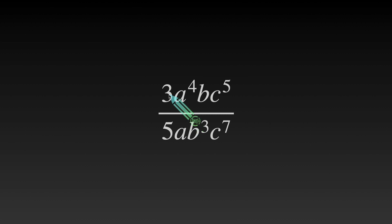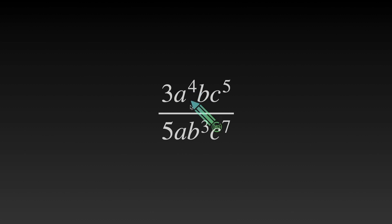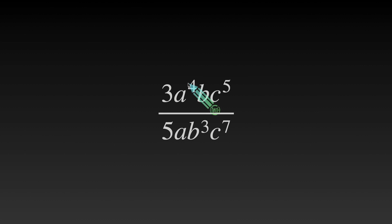I mentioned simplifying fractions — three over five will not simplify. Now subtracting exponents: let's look at the a's. Where do we have more a's? This is a to the fourth, and this is a to the understood first. Whenever you don't see an exponent with a variable, it's an understood one. Therefore, we have more a's at the top — three additional a's because four minus this understood one is three. So we're left with a cubed.